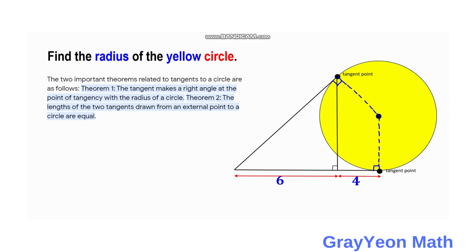For Theorem 2: the lengths of the two tangents drawn from an external point to a circle are equal. So these two external tangents are equal. This is because if we draw a line from the center of the circle towards the intersection of the two tangents, we actually form two right triangles.